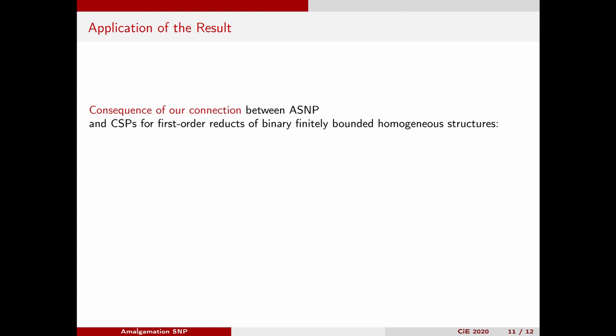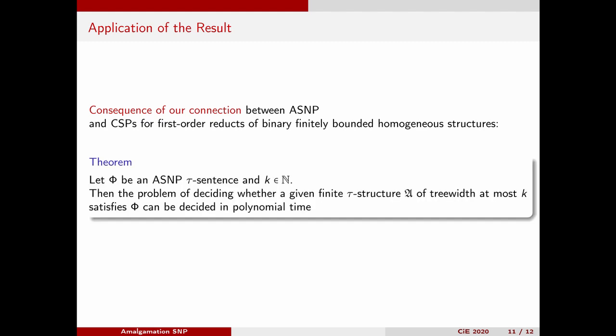In the paper, we prove that amalgamation SNP contains some other fragments of existential second-order logic that have been studied in the literature. We also present one application: for many computational problems, if you restrict the input to structures of tree width at most k for some fixed k, then the problem becomes polynomial time solvable. We show that this is the case if your problem can be expressed in amalgamation SNP. In fact, one can then use a datalog program to solve the problem. Datalog is an important formalism from database theory, and this basically follows from a result with Victor Dalmau about the power of datalog for constraint satisfaction problems.